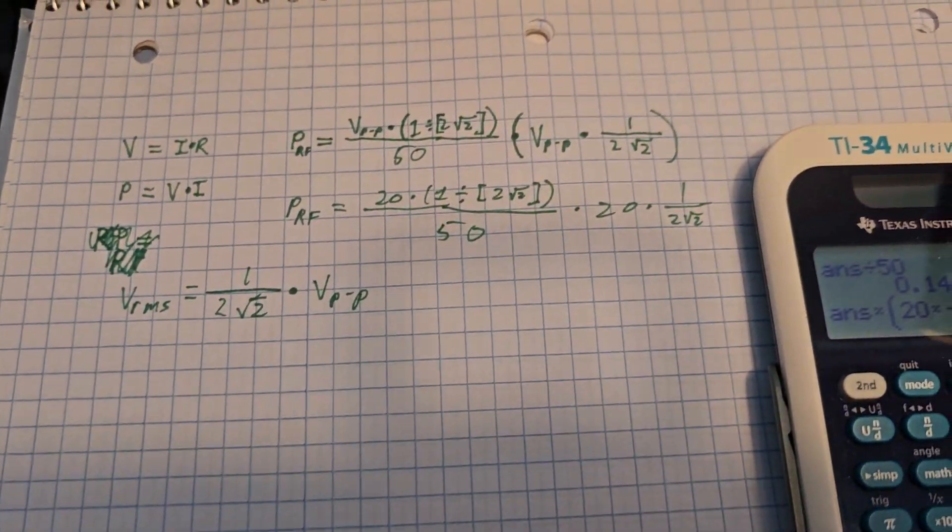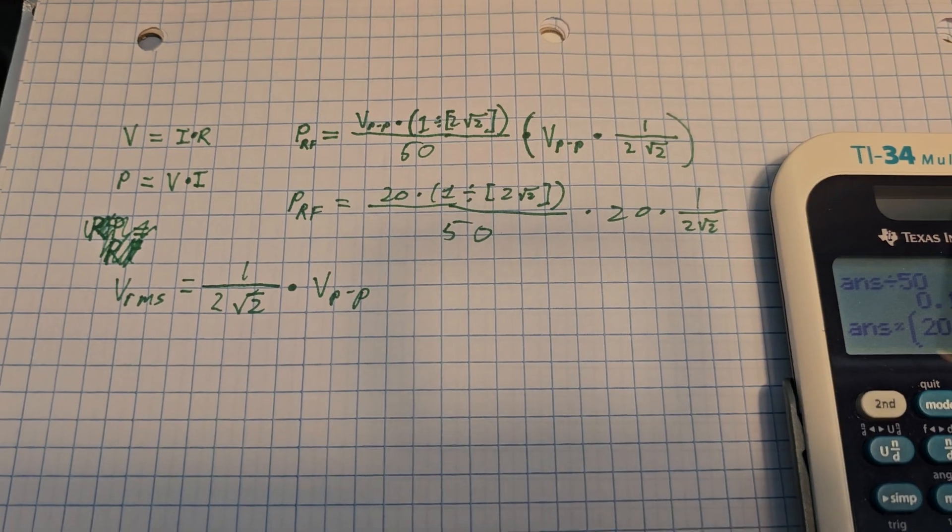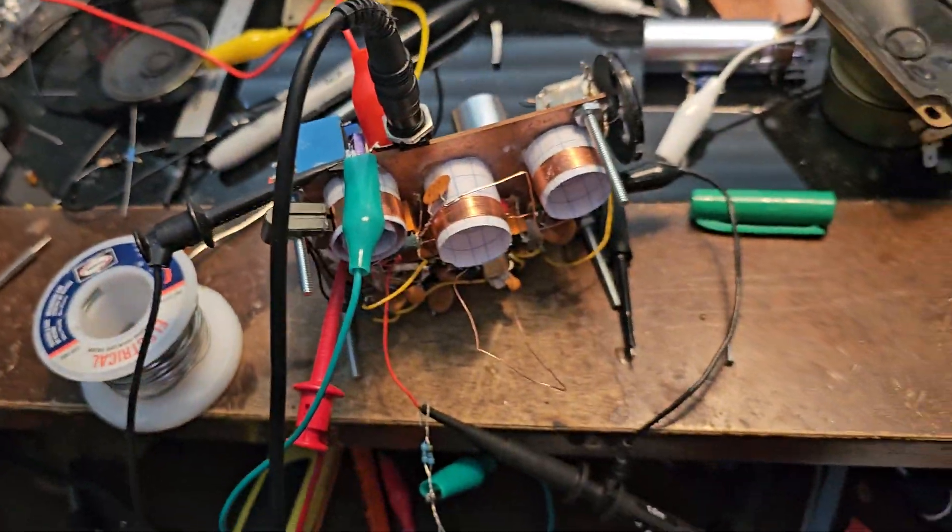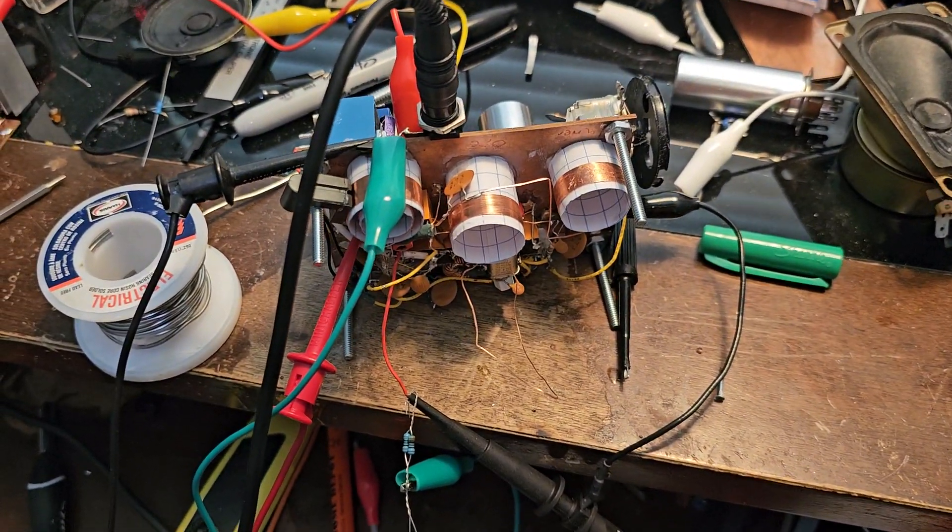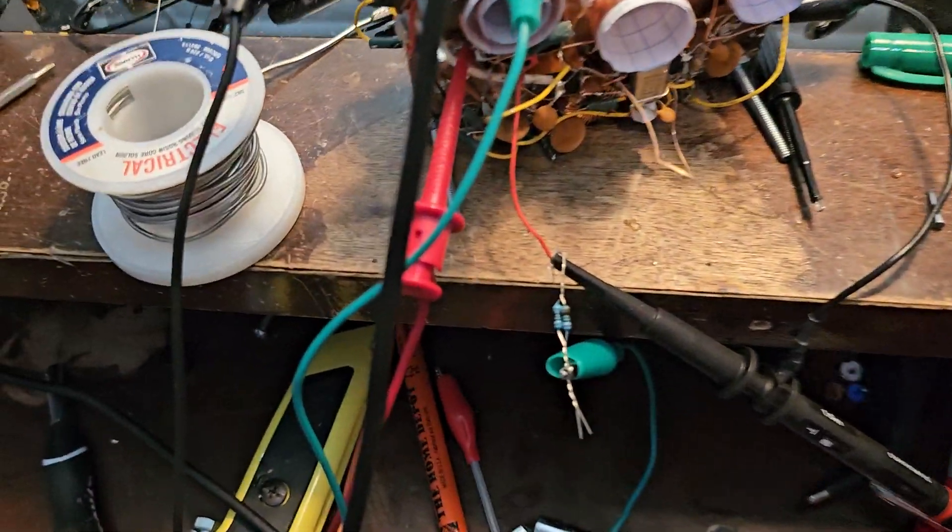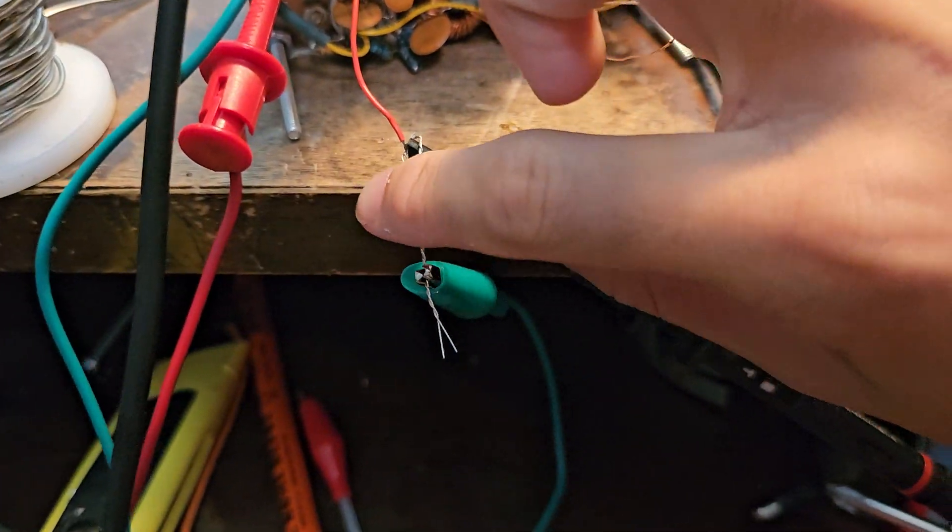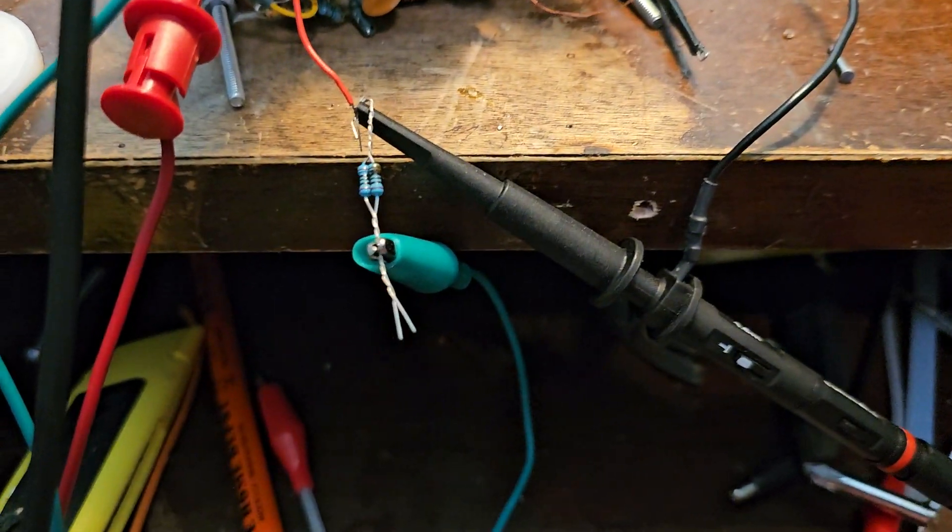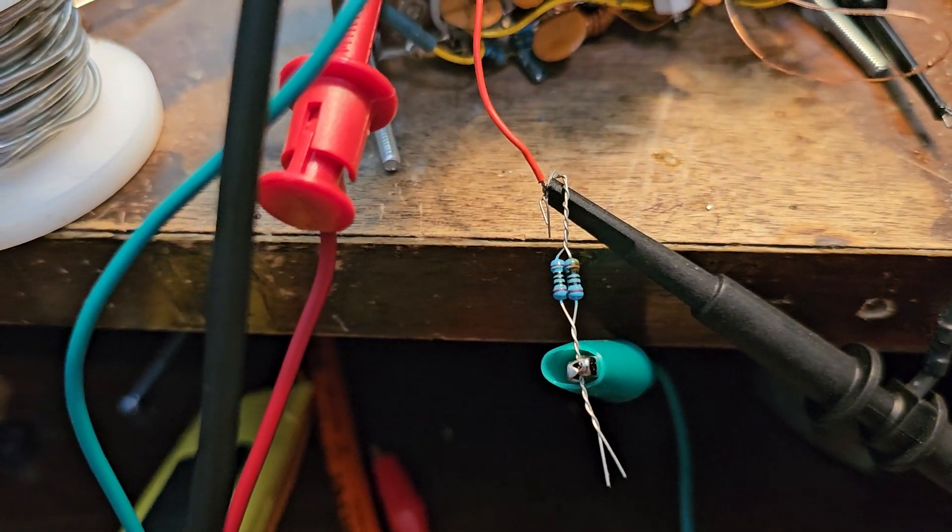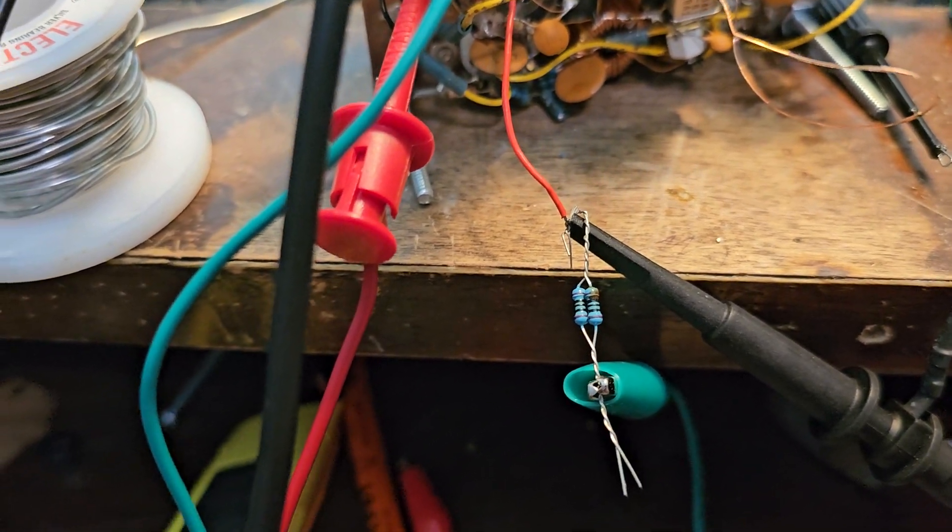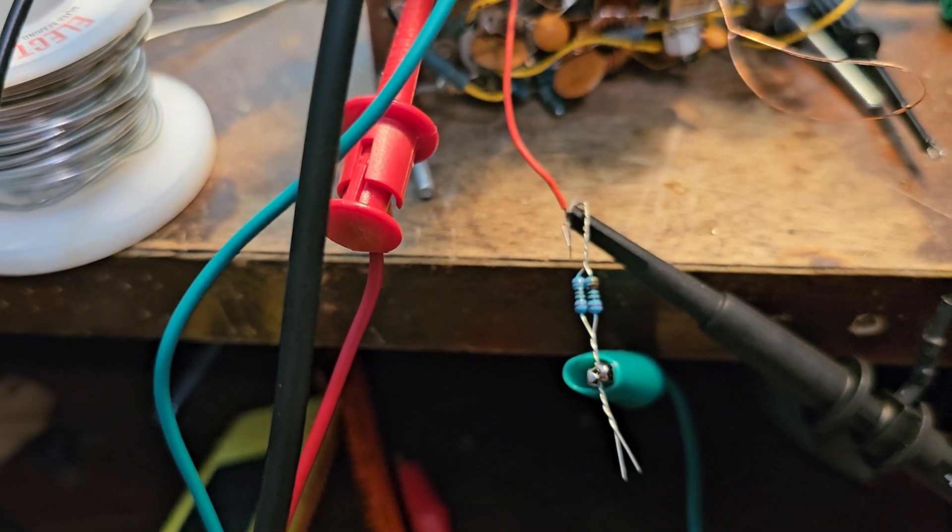So if our peak-to-peak voltage is 20 volts and we're using a load of 50 ohms, we can determine that this RF generator is outputting 1 watt of power. And when I touch this, it is very hot because it's just two quarter watt resistors tied together, which makes a half watt resistor which is going to get very hot under a load of 1 watt.